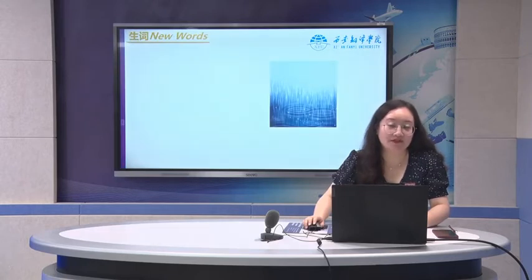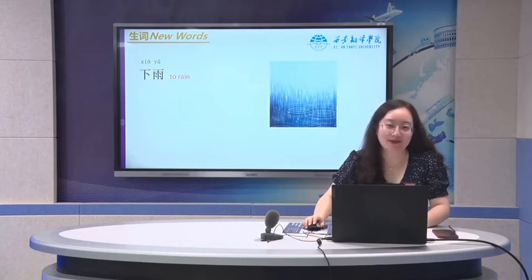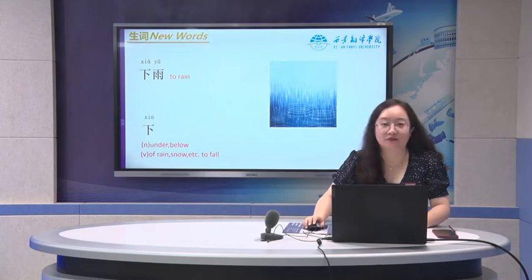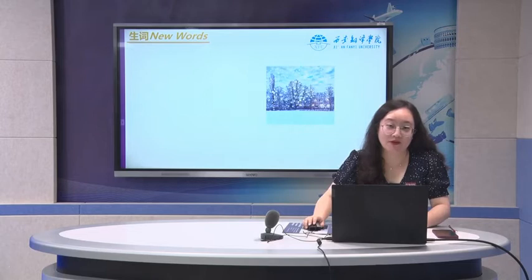Another expression of some weather. 下雨 means to rain. 下 means under or below — before we learned it as a noun, but with a verb it means to fall — rain, snow, etc. Also, to snow, we can say 下雪.